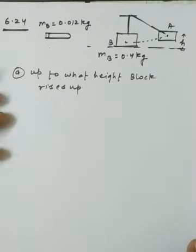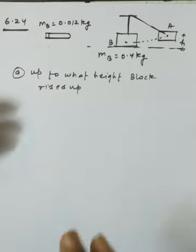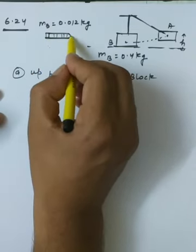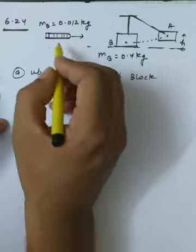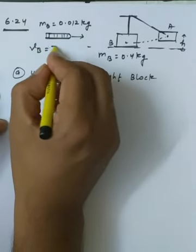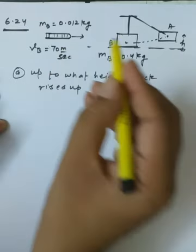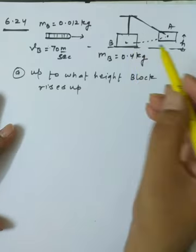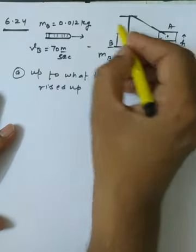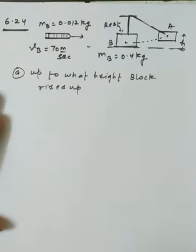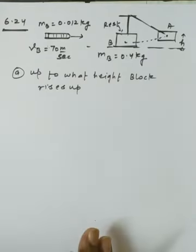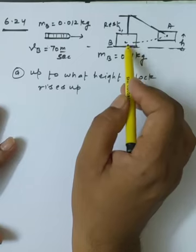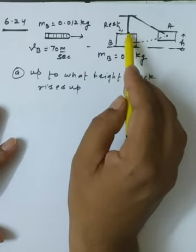Question 6.24: a bullet of mass 0.012 kg moves with velocity 70 m/s and strikes a wooden block at rest. The block is attached to a string of length L.